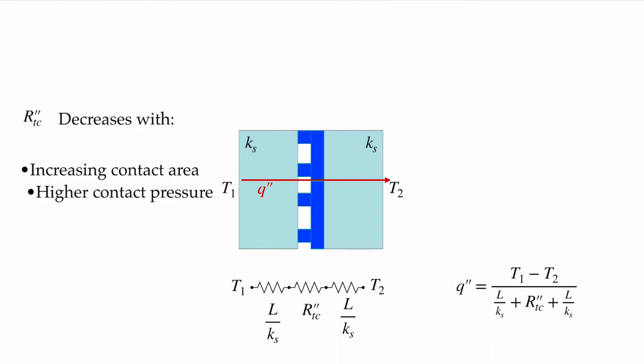And the thermal contact resistance is going to decrease with increasing contact area. If I take these two materials and I press them together harder and harder, I'm going to be causing more and more of those roughness elements to contact. I'm going to be increasing that contact area. And so that thermal contact resistance is going to decrease with a higher contact pressure because it increases the contact area, makes less of a disturbance, and we see a smaller contact resistance.